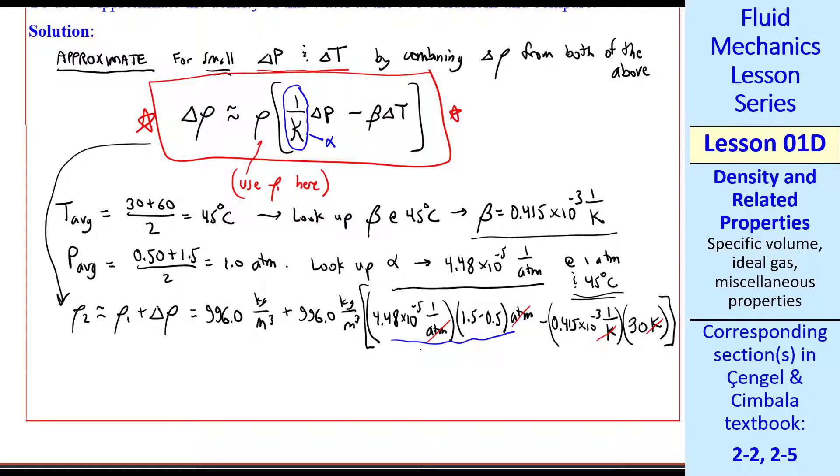The K's cancel. This first part is 4.48 times 10 to the negative 5. The second part is negative 0.01245. So we see that the temperature effects dominate compared to pressure effects. We've gone up by a whole atmosphere, but we've changed very little compared to this.